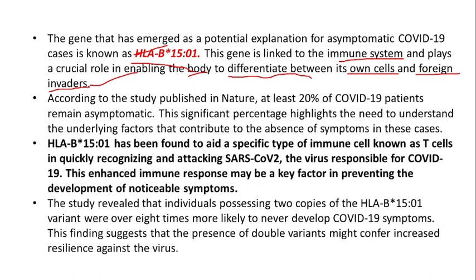According to the study published in Nature, 20% of COVID-19 patients were found to be asymptomatic. This significant percentage highlights the need to understand what factor was behind it. The main factor was this particular gene. It has been found to aid a specific type of immune cell called T-cells, which can recognize and attack SARS-CoV-2, the virus responsible for COVID-19. This helps the T-cells understand what to do.